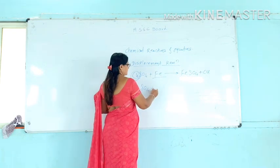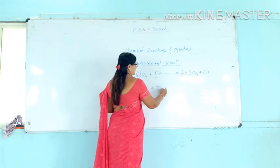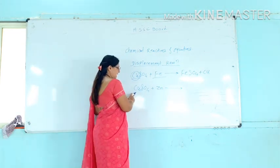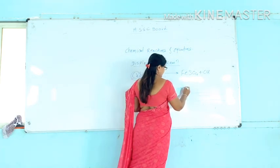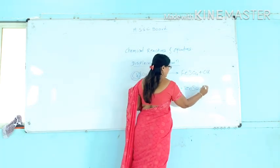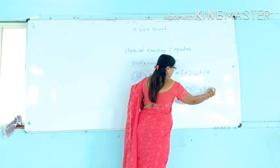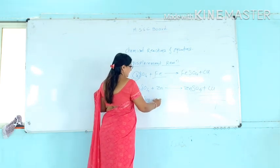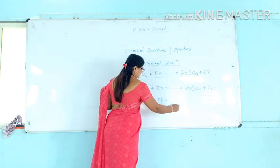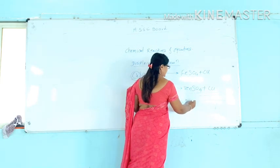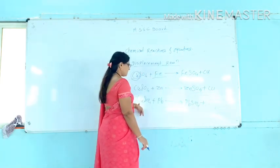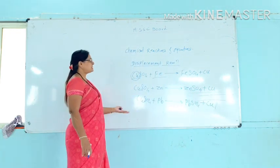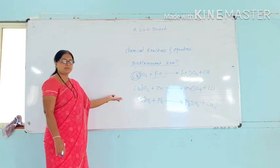Copper sulfate plus zinc: in this reaction, zinc is also more reactive than copper. Copper is displaced and zinc sulfate is formed; copper becomes separate. In the case of copper sulfate and lead, lead also displaces copper from copper sulfate, and copper becomes separate. These are the examples of displacement reaction.